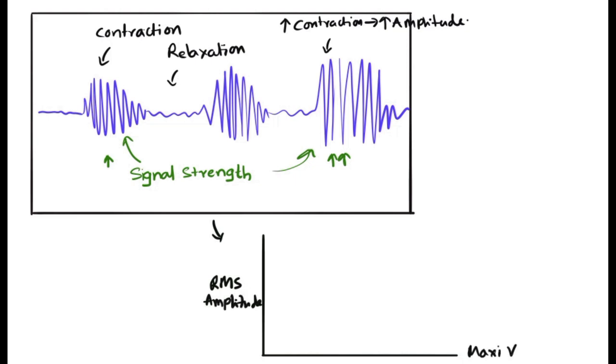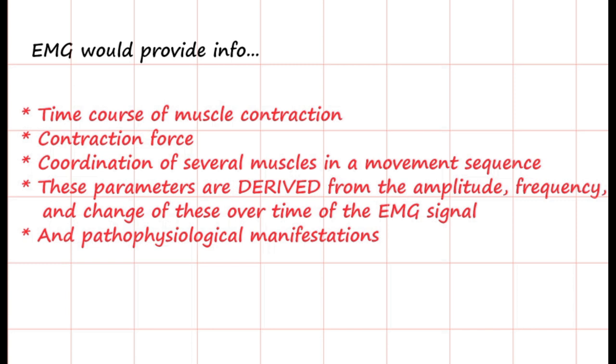We can get values like a linear exponential graph: as amplitude increases, the force also increases. EMG provides information on the time course of muscle contraction, the contraction force, and coordination of several muscles.